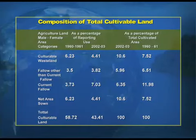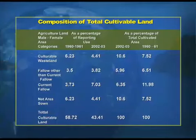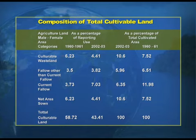On screen you can see a visual showing the composition of total cultivable land, with all categories and a comparison across different years. Looking at the last column — the percentage of total cultivated area for 1960-61 and 2002-03 — you can see the changes over time. Under culturable wasteland there is a downward trend in percentage of area, which is a good sign for a country like India where land for agriculture is scarce.